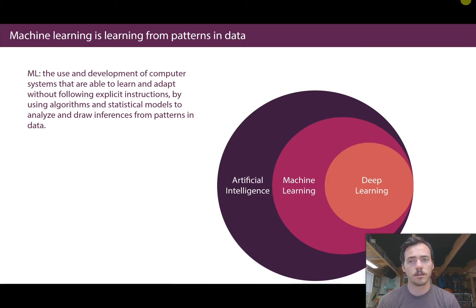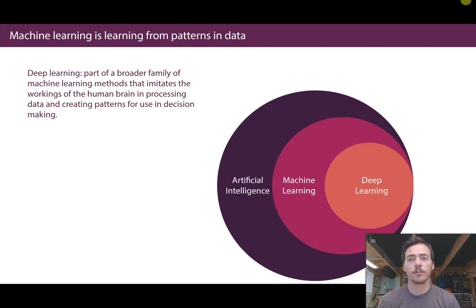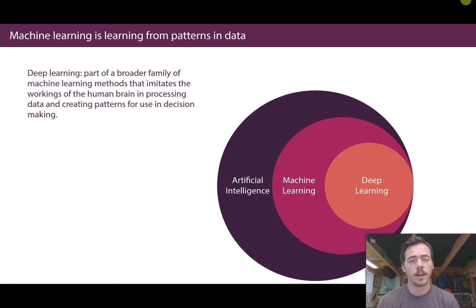Machine learning is slightly different. The definition is: the use and development of computer systems that are able to learn and adapt without following explicit instructions, by using algorithms and statistical models to analyze and draw inferences from patterns in data. That would be a subset of AI, because finding patterns and developing approaches without being told the explicit instructions is something a human would have to do. We can go further into the subset and get to deep learning.